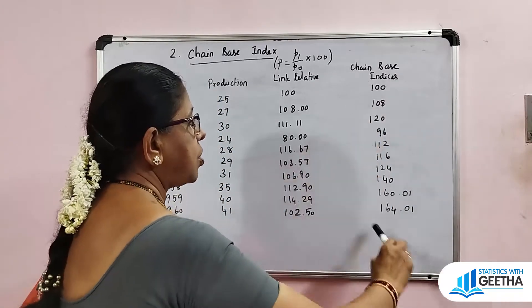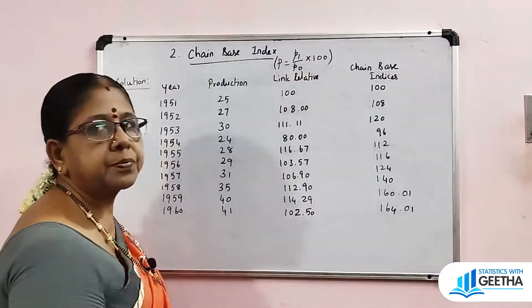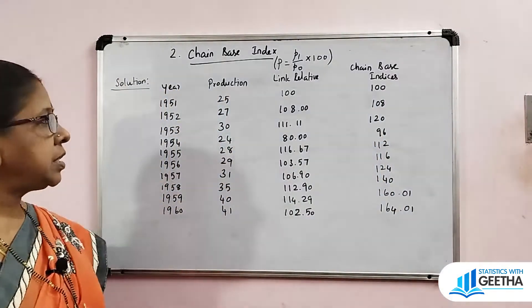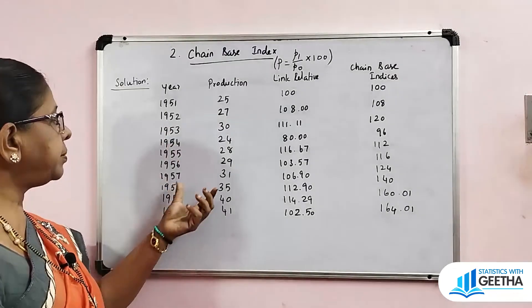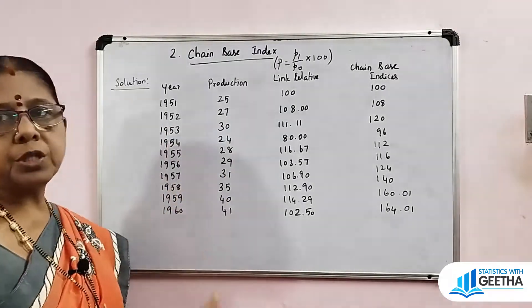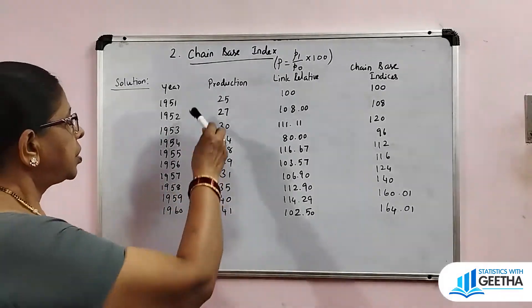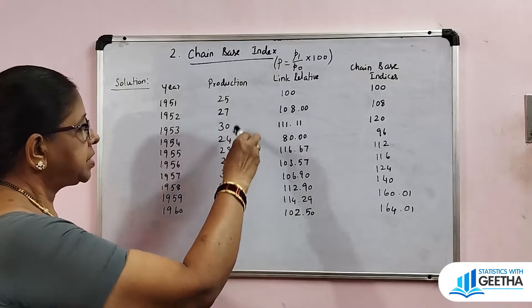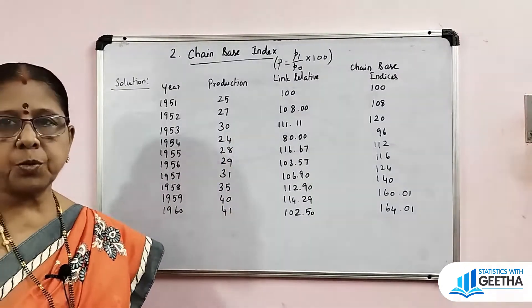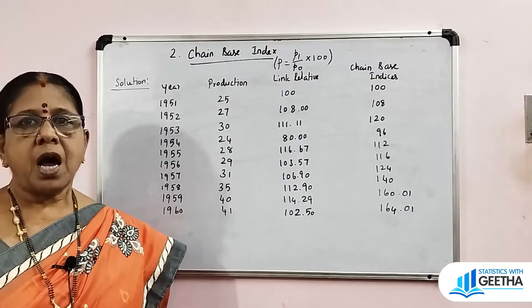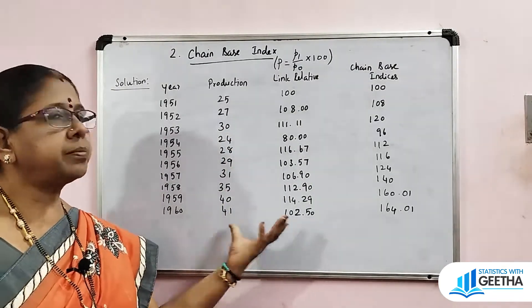These are the chain-based index numbers for one commodity across various years. There is only one commodity, which is production. That is the chain-based index number.